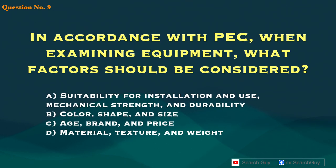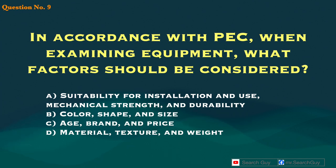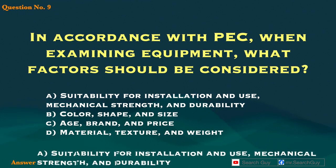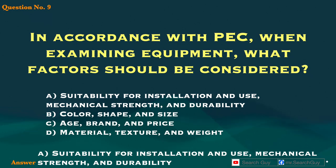Question 9. In accordance with PEC, when examining equipment, what factors should be considered? A. Suitability for installation and use; mechanical strength and durability. B. Color, shape, and size. C. Age, brand, and price. D. Material, texture, and weight. Answer: A. Suitability for installation and use; mechanical strength and durability.